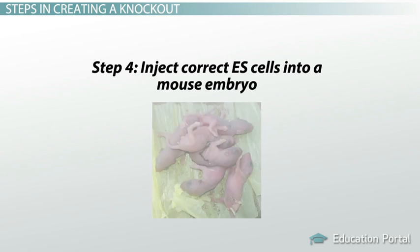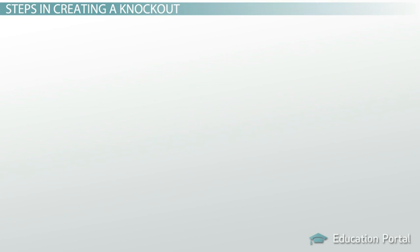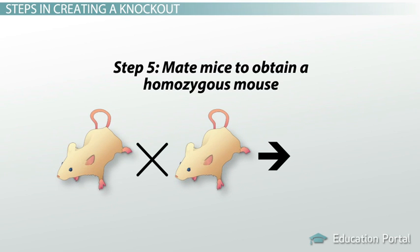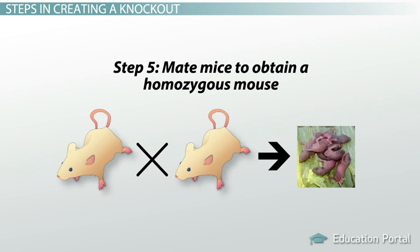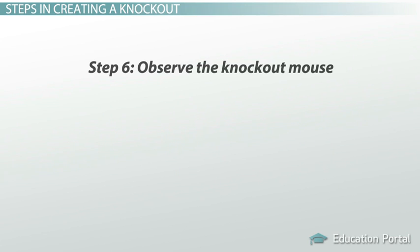In order to get a mouse that is homozygous for this knockout, we'll take the babies that are born and use them in step five. Here, we will mate mice to obtain a homozygous mouse. We will use different molecular methods to confirm that we have obtained our knockout mouse. Once we've completed these steps, step six will be to observe the knockout mouse.